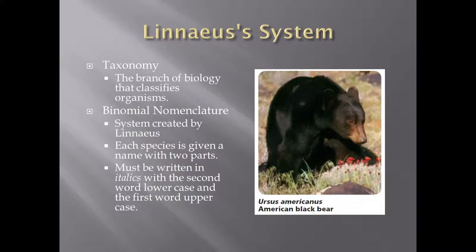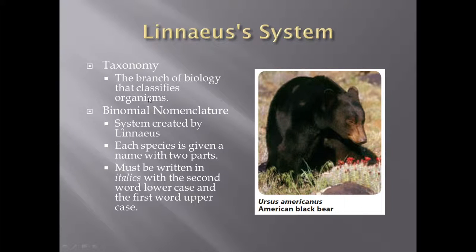So that's where the next system came into being, which is called the Linnaean system, or Linnaeus' system. Linnaeus was the guy who really put down the ground rules for what's called taxonomy. Taxonomy is the branch of biology that classifies organisms — their job is to look at animals, plants, and other types of organisms and put them into different categories. In order to do this, Linnaeus created a system called binomial nomenclature. Binomial nomenclature is a way of naming animals based upon a certain system.